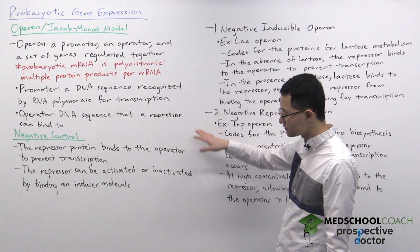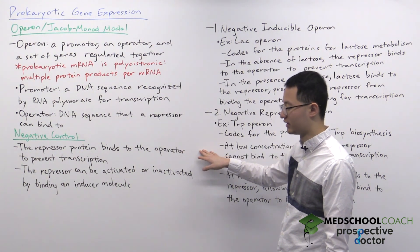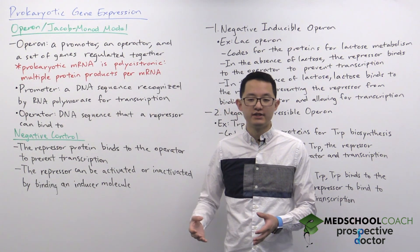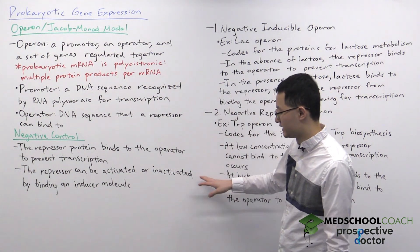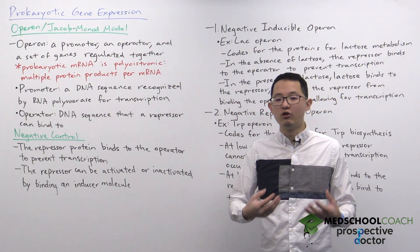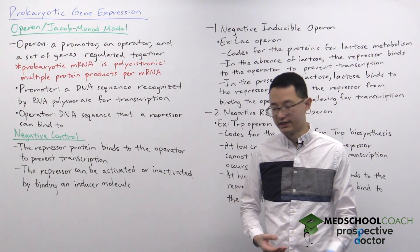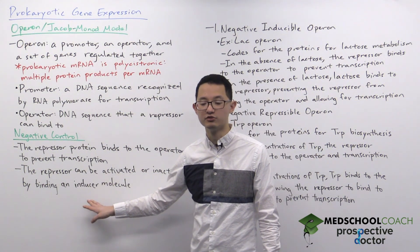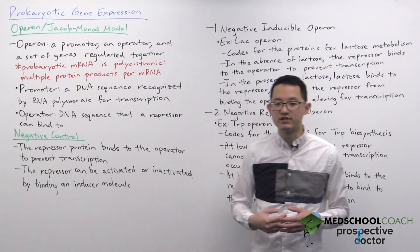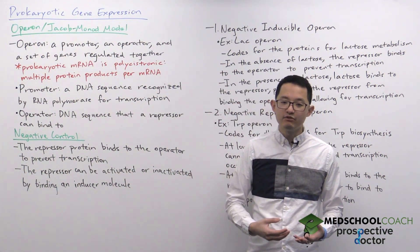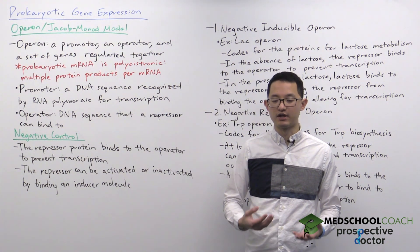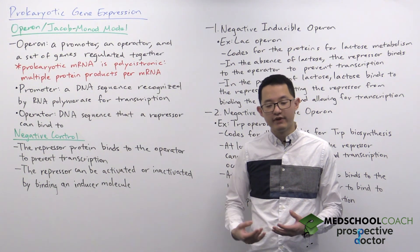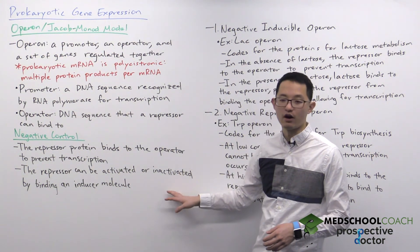In negative control, the repressor protein binds to the operator, and when it does, RNA polymerase is blocked so transcription cannot occur. However, the repressor protein is not always able to bind to the operator — whether or not it can bind depends on the presence or absence of some sort of inducer molecule. The inducer molecule binds to the repressor protein, altering its conformation, which can then allow or prevent the repressor from binding to the operator.